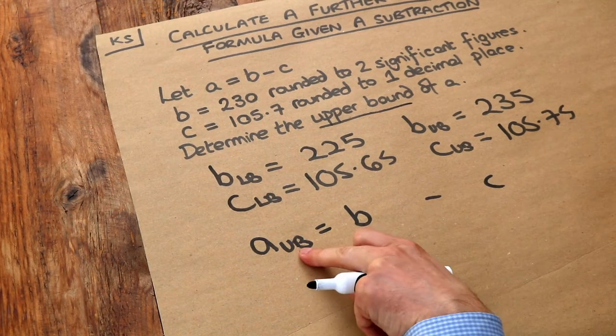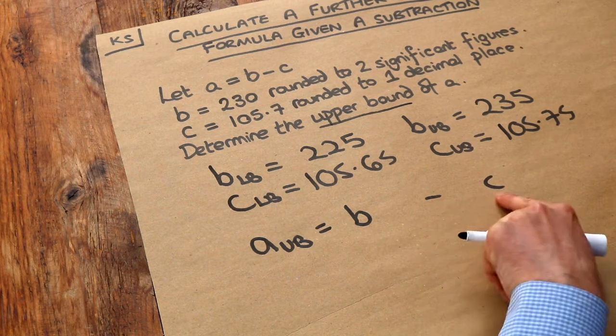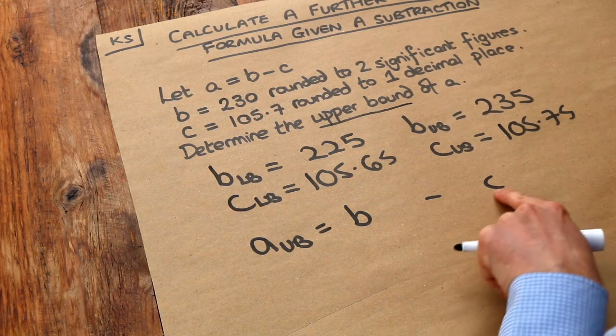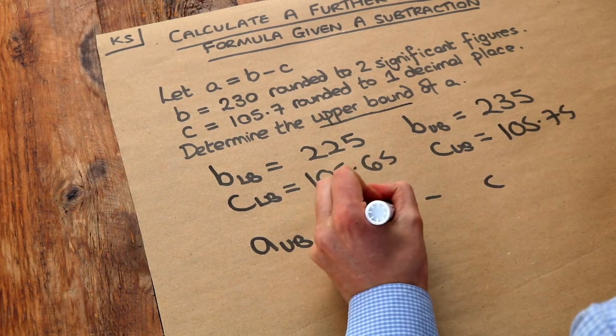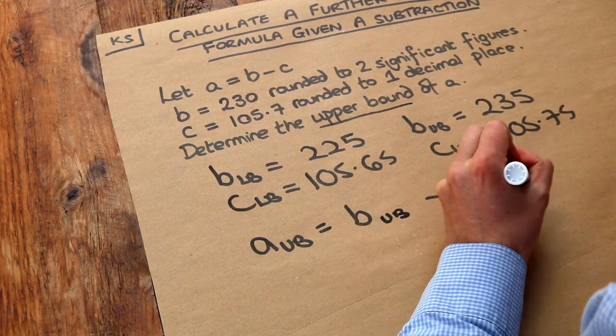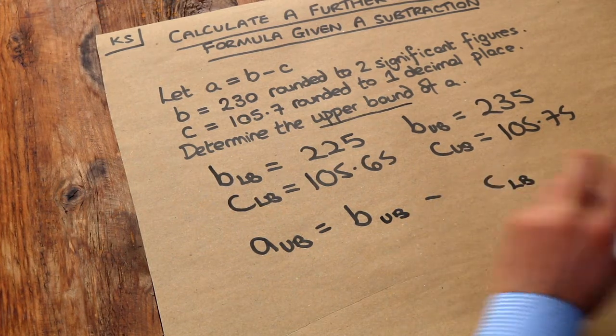If I want a big value for A I should start with a big value and subtract as small a number as possible because the smaller the number you subtract the bigger the result you get. So we want to use the upper bound for B and the lower bound for C. Just use common sense to work out whether we use the upper bound or the lower bound.